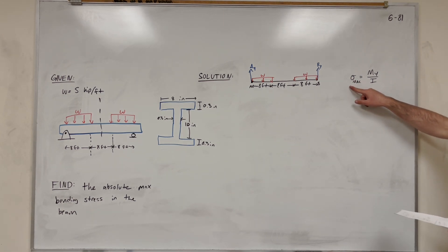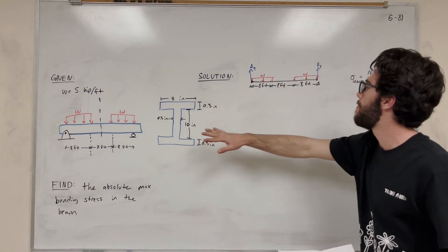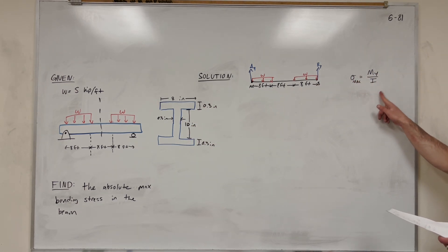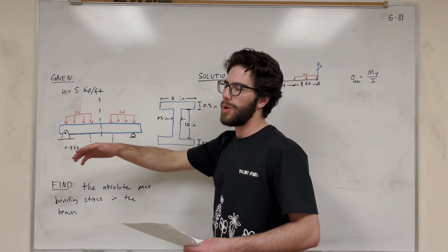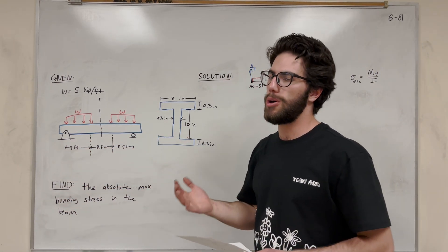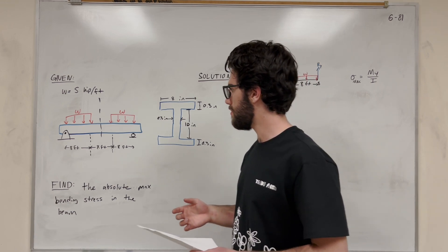So what we're actually trying to find is the largest max bending stress that the beam can support, given that the distributed load is 5 kip feet. And how are we going to do that? Well, we're going to use our equation. The maximum bending stress is moment times y, which is distance from the centroid of the cross-sectional area, over moment of inertia. So we're going to need to solve for all of these things.